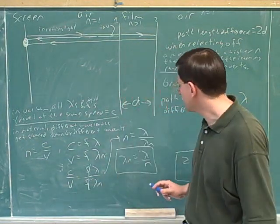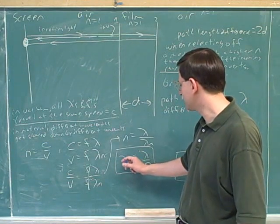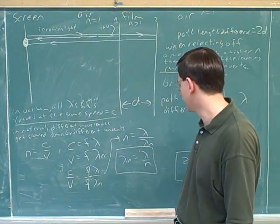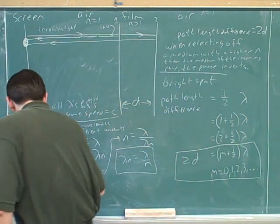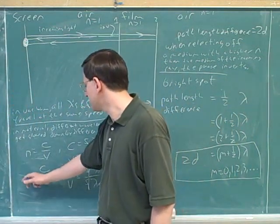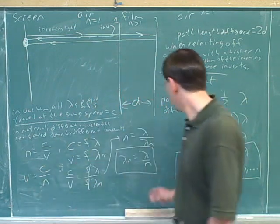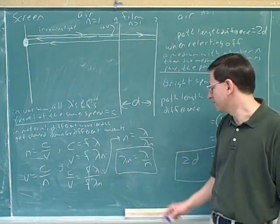So here's what we need. This tells us how much the wavelength has decreased in the new medium. Just like N tells us how much the speed has decreased in the new medium, N tells us how much the wavelength has decreased in the new medium.